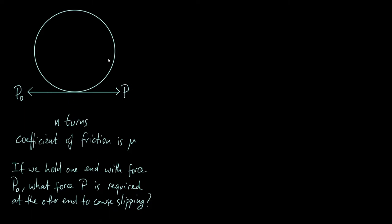So we've got this rope wrapped around the cylinder n times, and there's friction between the rope and the surface of the cylinder. The coefficient of friction that characterizes that friction is mu. These are the parameters of the problem. We're holding one end of the rope on the left with a force of P0, and we want to know how hard you have to pull on the other end — what is the force P required to cause the rope to slip and actually move relative to the cylinder. What we are deriving is an equation called the capstan equation.